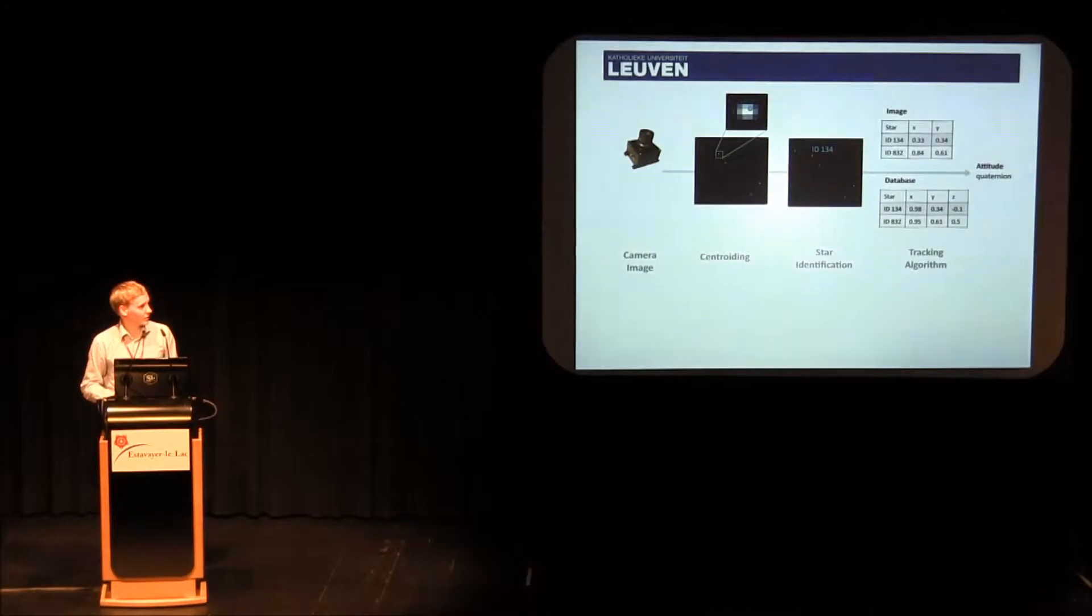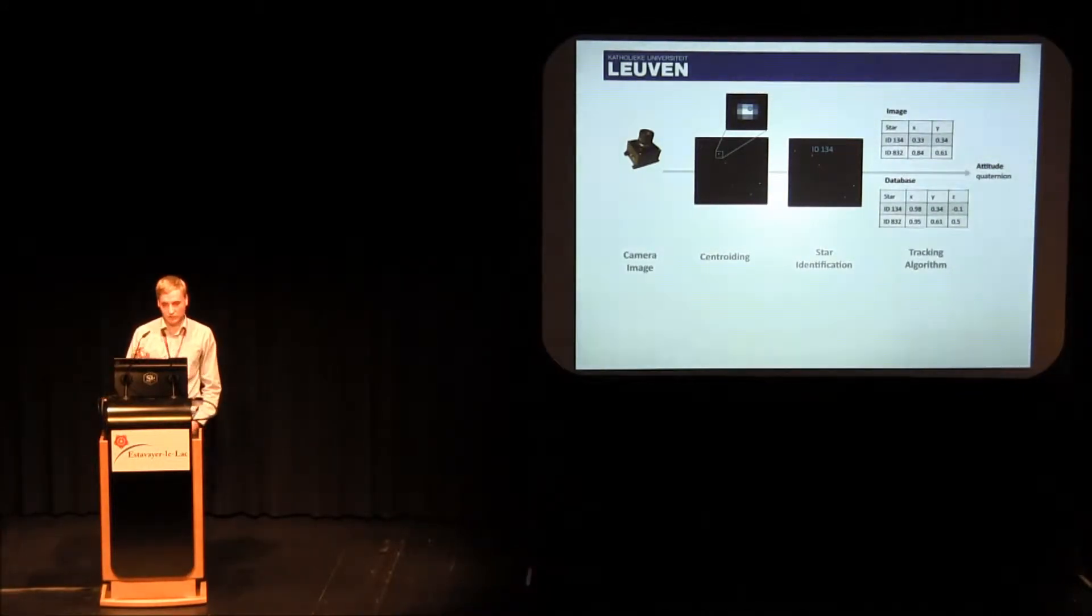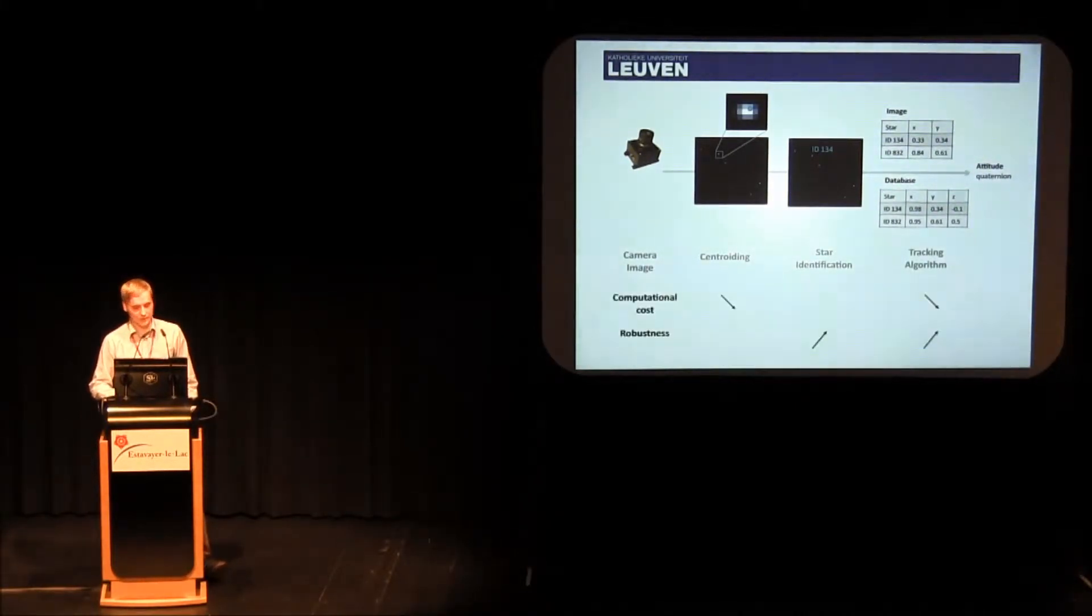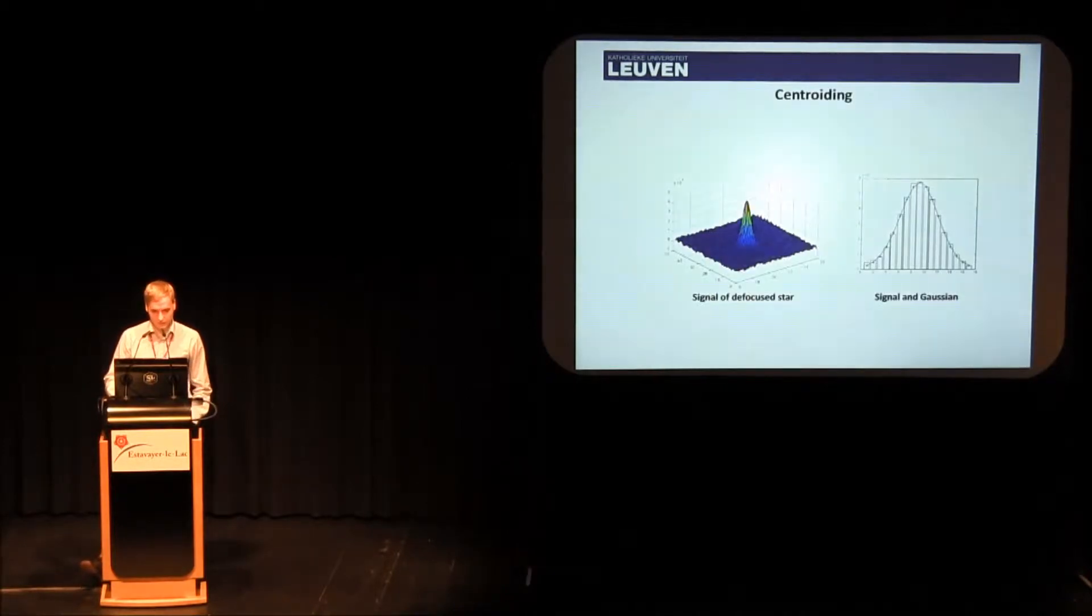If you look at the StarTracker, basically what it does, it takes an image of the stars, it tries to determine the star centroids as accurately as possible, and after that, in the star identification step, it tries to identify which stars are in the image. When you know what the camera stars are, what the database stars are, then you can determine the attitude using the tracking algorithm. What we are trying to do is to reduce the computational cost. We will reduce the cost of the centroiding algorithm and of the tracking algorithm, and the robustness of the star identification and the tracking algorithm will go up.